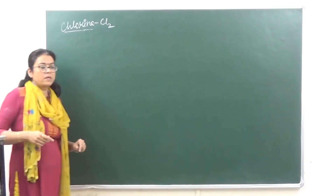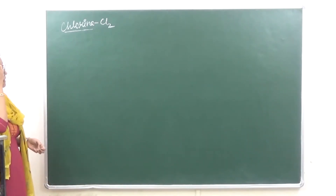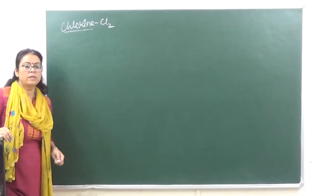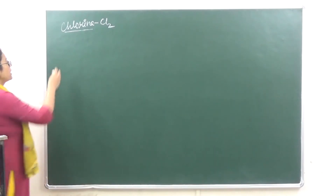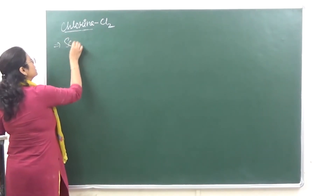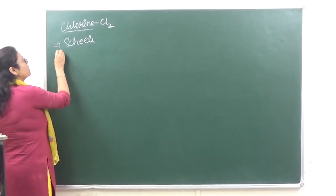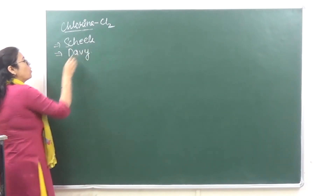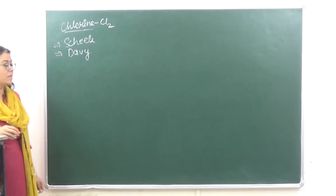Let's start with the next topic today — the compounds of Group 17. The first compound we are going to study is Chlorine. Chlorine was discovered by Scheele and the name was given by Davy.